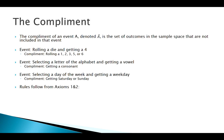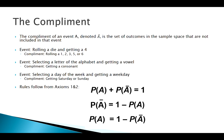We can find complement probabilities using axioms one and two. Since our entire sample space adds up to one, the probability of an event A plus the probability of its complement must equal one. So the probability of an event not occurring is one minus the probability that it occurs. This is the complement rule — a very simple rule that follows from the first two axioms. We won't often see it used by itself; we'll see it used in conjunction with other rules to make our life a little easier.